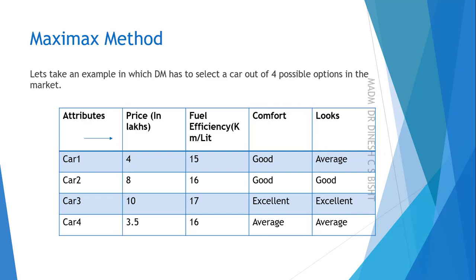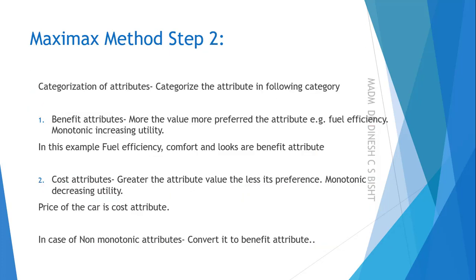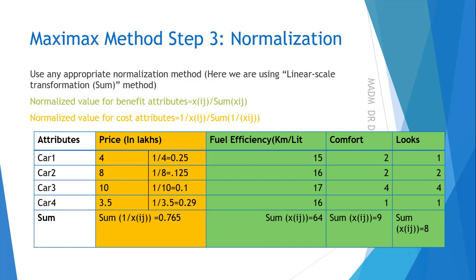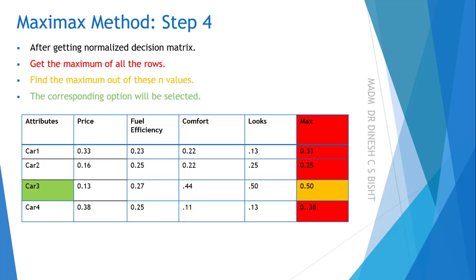The same example is used here. The steps are the same: step 1 converts linguistic terms to a scale of 1 to 5 as already explained, step 2 is categorization of attributes — same step, and step 3 normalization is also the same. Any normalization method can be used depending on the problem.